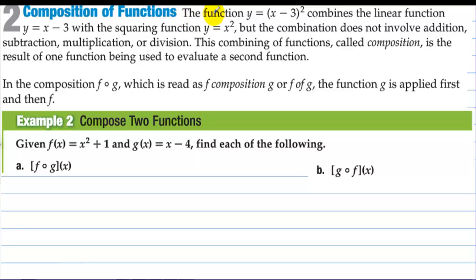Composition of functions. The function y equals (x minus 3) squared combines the linear function y equals x minus 3 with the squaring function y equals x squared, but this combination is not addition, subtraction, multiplication, or division. This combination, called composition, results from one function being used to evaluate a second function. In f composed with g, the function g is applied first and then f.